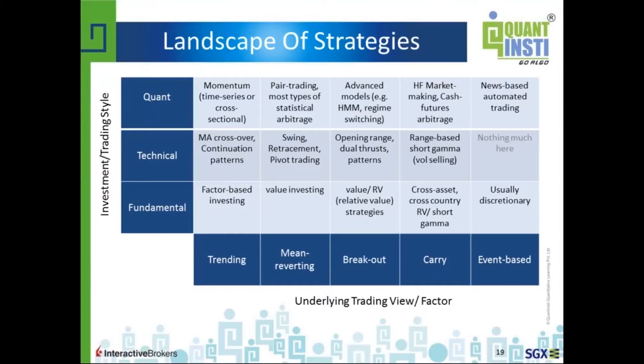Similarly, for mean reversion trades, technical traders typically go for swing trades, retracement patterns, or range-bound trading. The most famous fundamental strategy, value investing, is basically a mean reversion trade — a stock has become very cheap compared to its fundamental value, so you assume it will return to that value and you buy it. For a quant fund, that becomes pair trading, and most statistical arbitrage is in fact a kind of mean reversion trade.